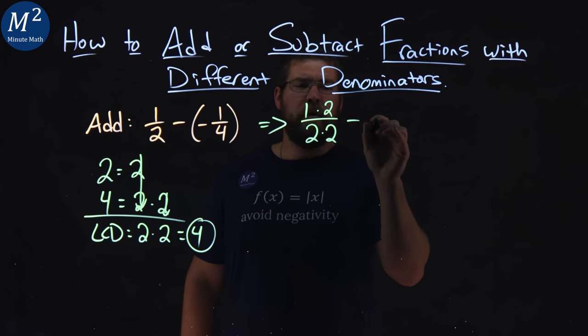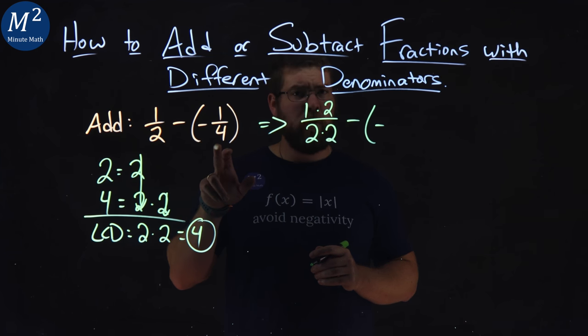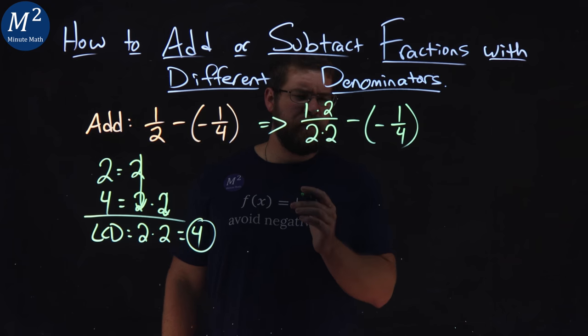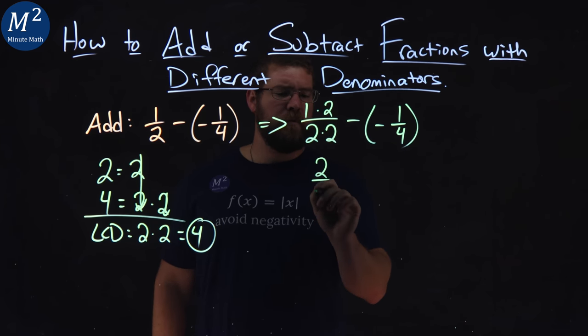The second part, we have minus a negative. Well, one-fourth already has a four in the denominator, so we can leave it as such. Sometimes that happens. Keep going. One times two is two, over two times two is four.